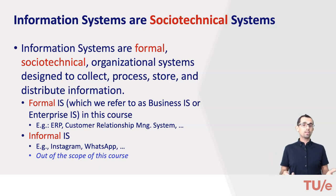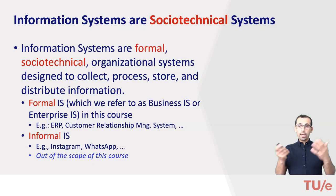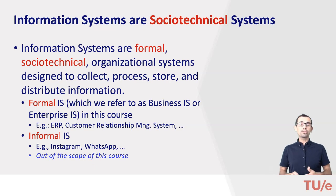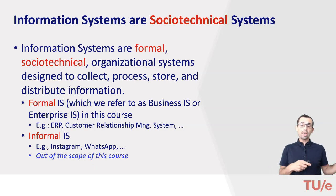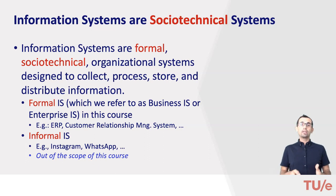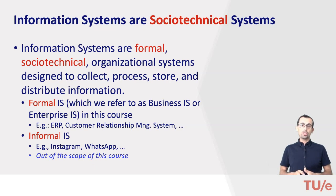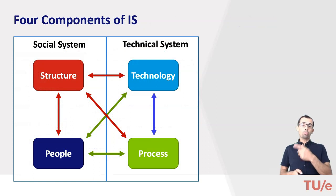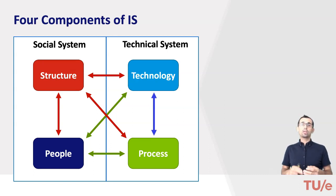In this course we're dealing only with formal information systems, which we refer to as business information systems or enterprise information systems. So informal IS like WhatsApp or Instagram are not part of the scope of this course. Any formal organizational IS can be assumed to have four fundamental components that must work together to deliver the information processing functionalities that the firm requires to fulfill its information needs.